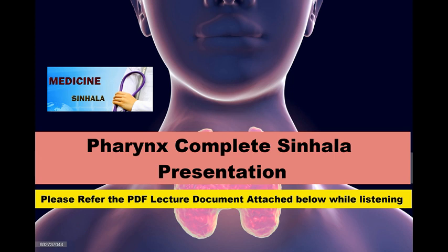The piriform fossa is a site where pressure stones can be found. If asked why, refer to smugglers — this is a classic viva question.